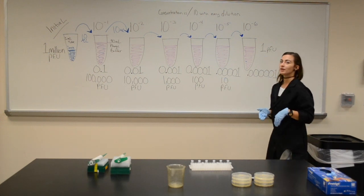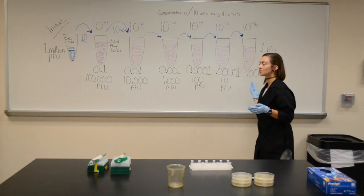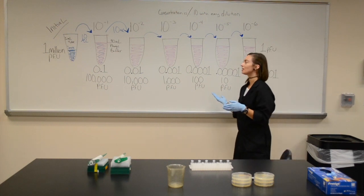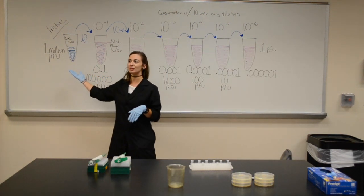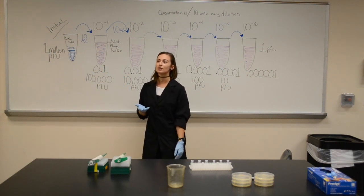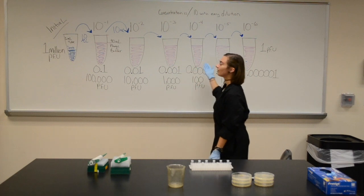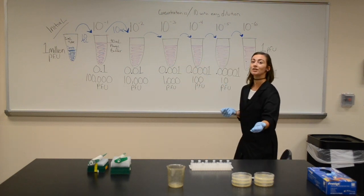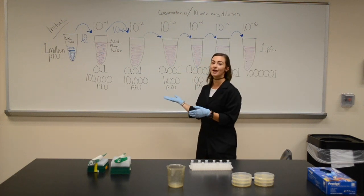We do six dilutions usually minimum because this 1 million number in your original sample could be 800 million, it could be 1 trillion, we don't really know. So we want to dilute it down and then plate it out so we can actually see how much we actually have in our sample.